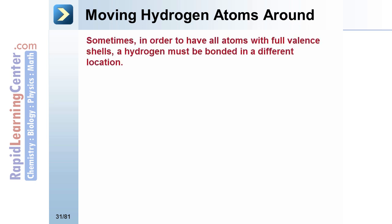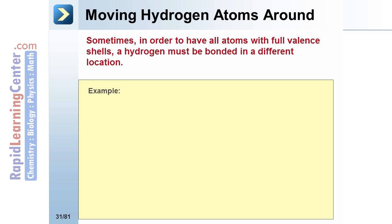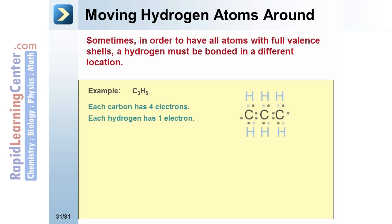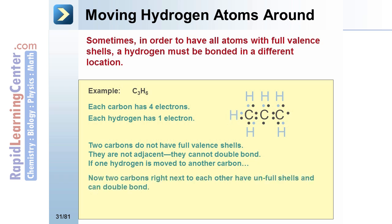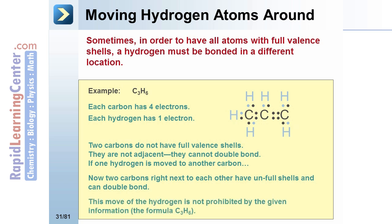If two atoms are not adjacent and have single electrons that are not being bonded, sometimes you can move a hydrogen atom to a different location so that two atoms that are adjacent can double bond. Here's an example. Each carbon has four and each hydrogen has one valence electron. The carbon atoms on either end of the molecule are not full — they each only have seven electrons. However, they cannot double bond because they are not adjacent. If a hydrogen is moved, now there are two carbon atoms right next to each other which can double bond. The move of the hydrogen is not prohibited by the given information — our molecule still has three carbons and six hydrogens.